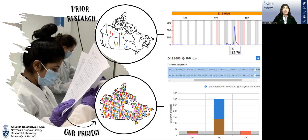The objective of our research is to generate allele frequency data, as well as other data such as ancestry and phenotype, for the following Canadian populations: European, East Asian, Oceanic, American, African, South Asian, and Southwest Asian.